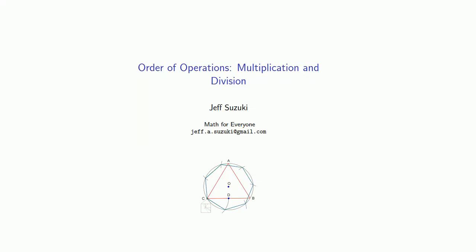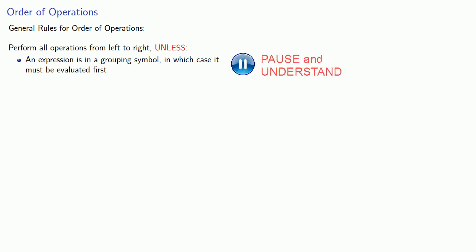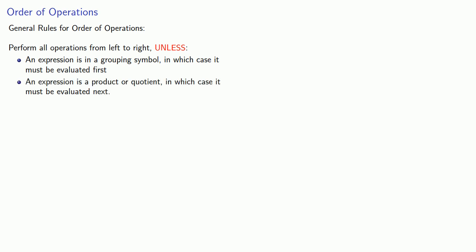So where do multiplication and division fit in the order of operations? The general rule for the order of operations is we perform all operations from left to right unless... The first unless is that an expression is in a grouping symbol, in which case it must be evaluated first. The second unless is an expression is a product or quotient, in which case it must be evaluated next.